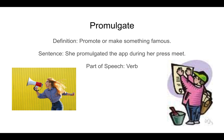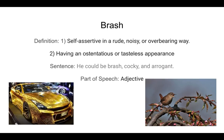The next word is brash, spelled B-R-A-S-H. Brash has multiple definitions. The first definition is self-assertive in a rude, noisy, or overbearing way — the picture with the bird represents this. The second definition is having an ostentatious or tasteless appearance, which is represented by the golden car that attracts a lot of looks. The sentence is: he could be brash, cocky, and arrogant. Part of speech is an adjective.